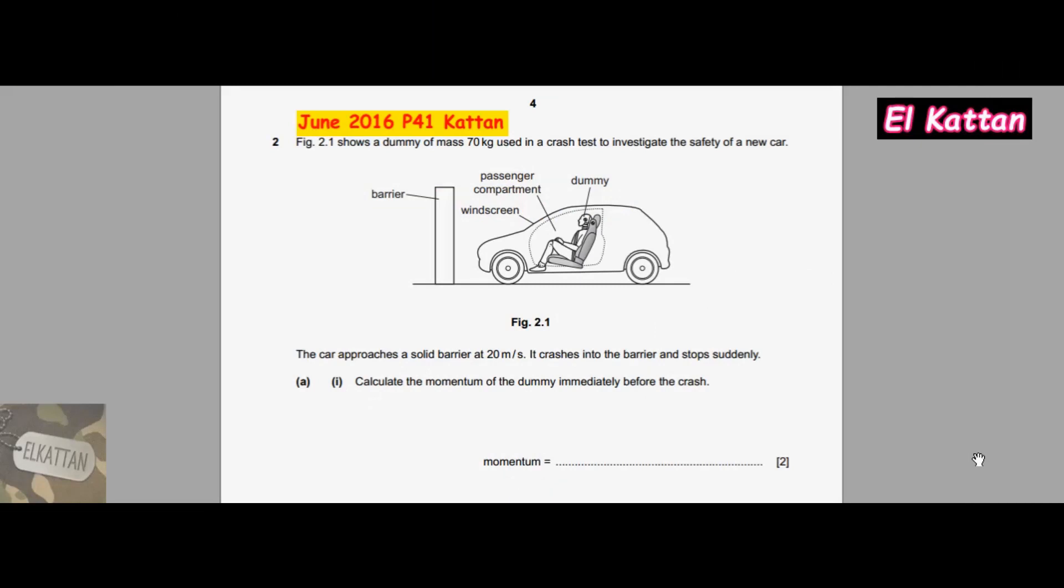Hi guys and welcome to our physics series, and today we have Question 2. Figure 2.1 shows a dummy of mass 70 kg used in a crash test to investigate the safety of a new car. The car approaches a solid barrier at 20 m/s, crashes into the barrier, and stops suddenly.